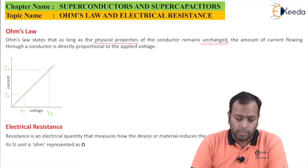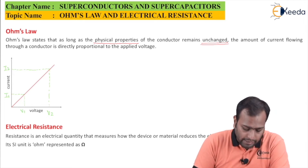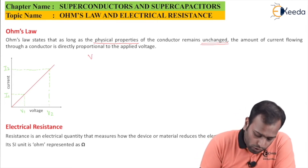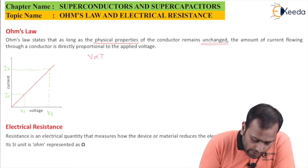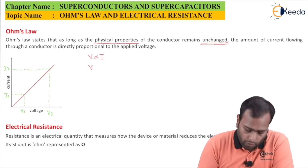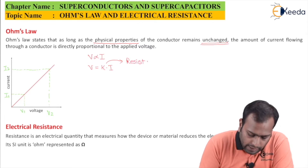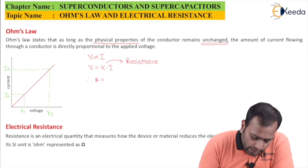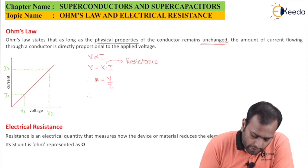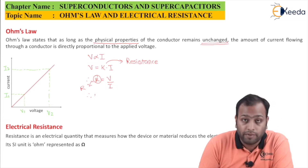How do we compute this? Electrical resistance is the slope of the V-I graph. Ohm's law says V is directly proportional to I. Mathematically, V is equal to some constant K times I, and this constant K is nothing but resistance.